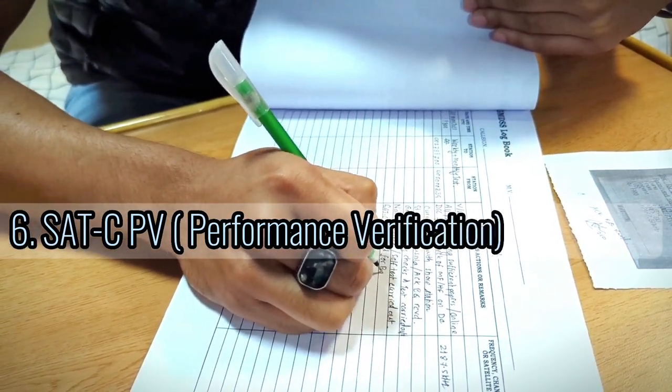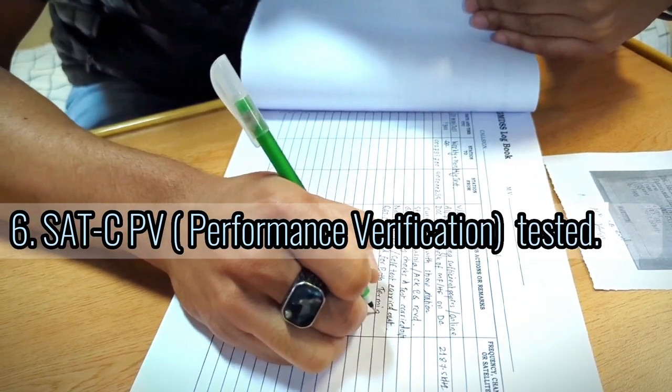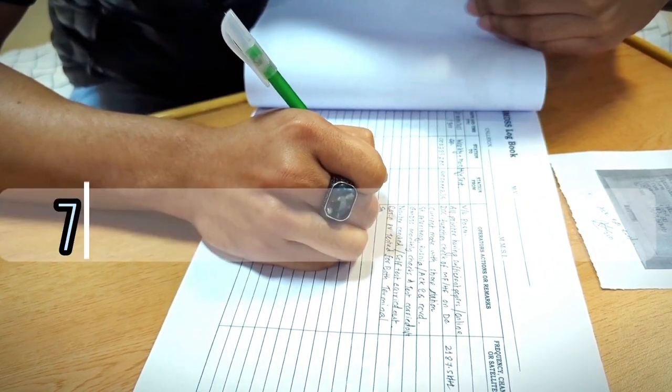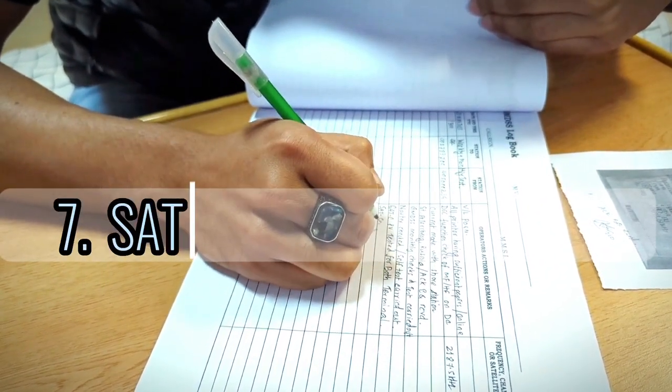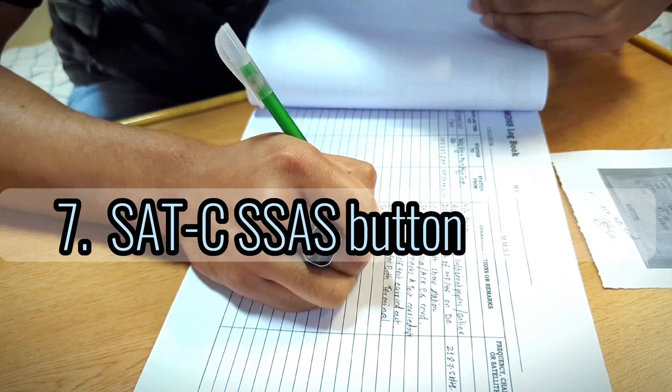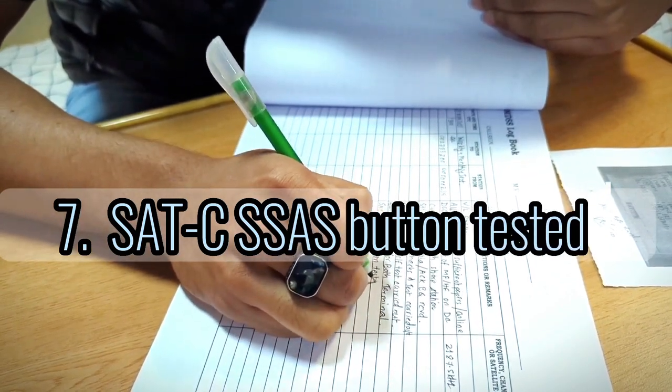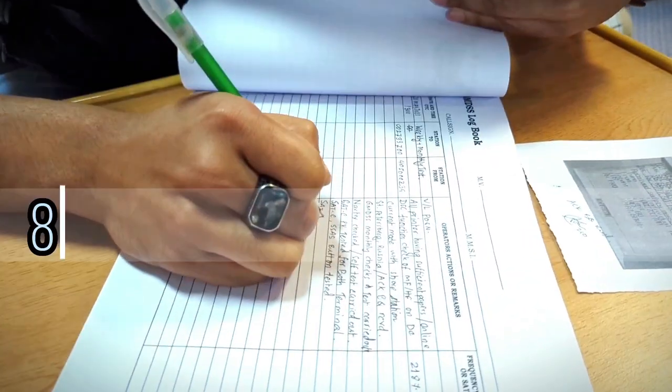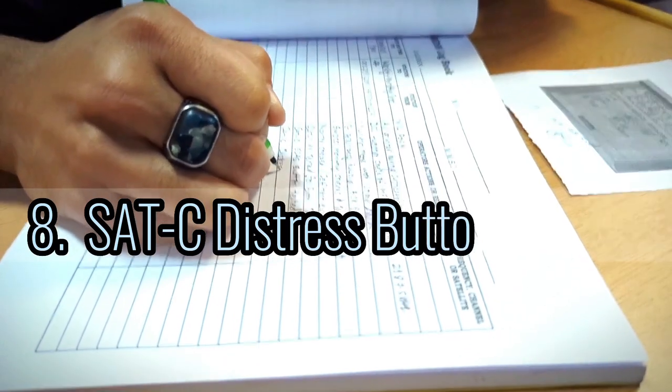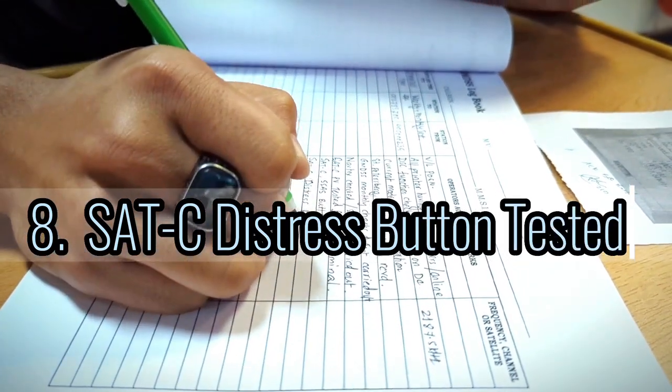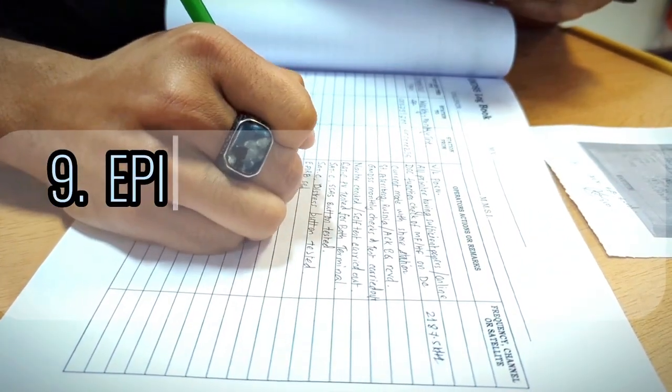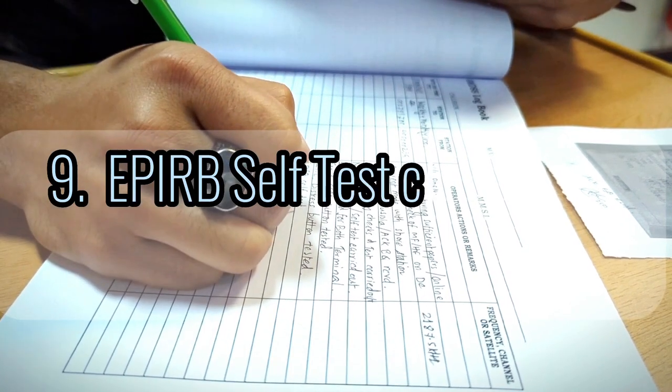For both terminals. The next one, Set C SSAS button tested. Set C distress button EPIRB, self test carried out.